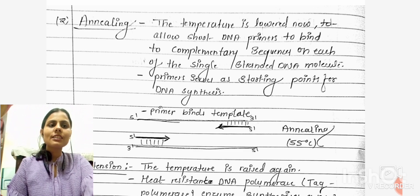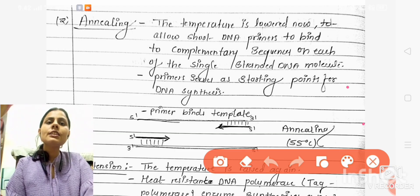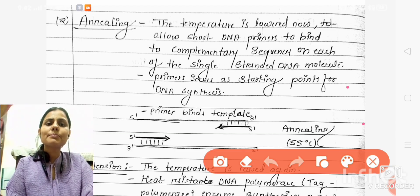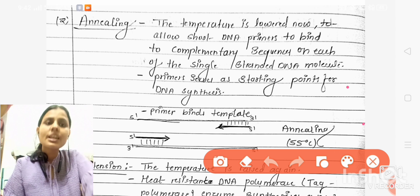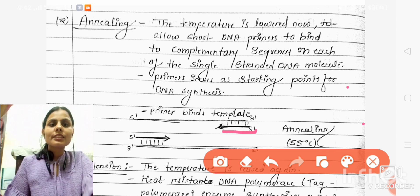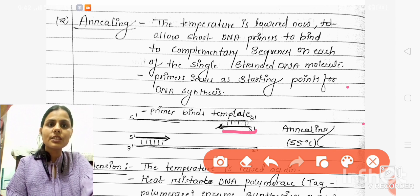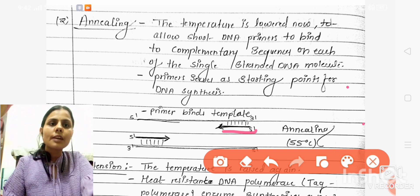After denaturation, there is a step called annealing. Annealing means binding, so here the binding of primers takes place. Primers are short polynucleotide sequences that bind to the DNA strand and help in the start of DNA synthesis.